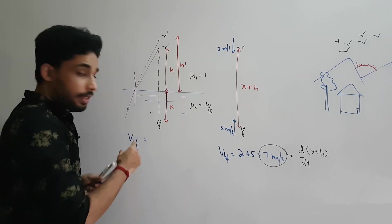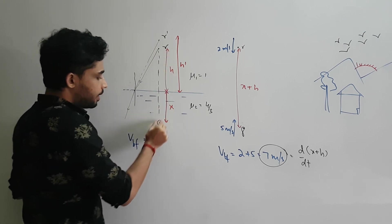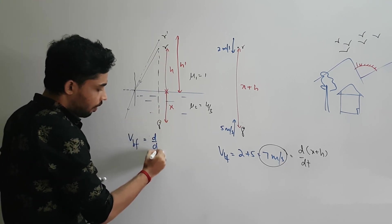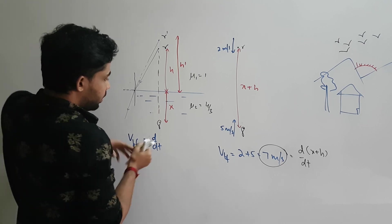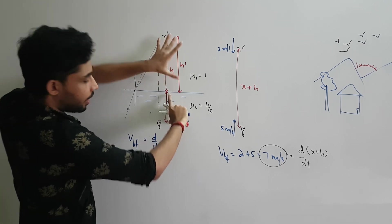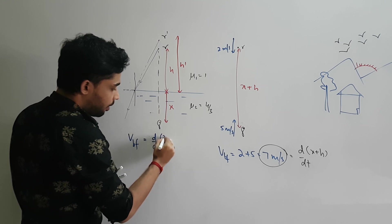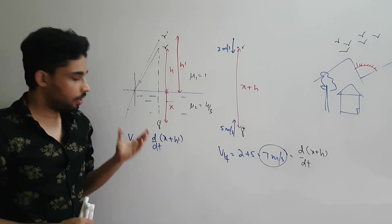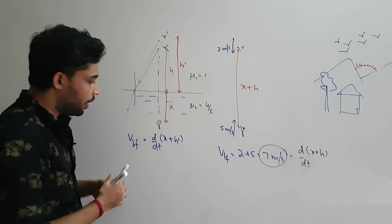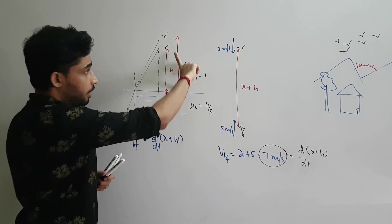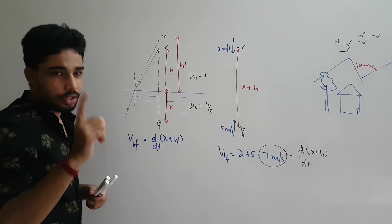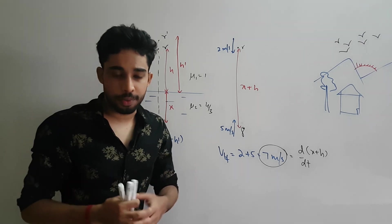In this case, the velocity of the bird as seen by the fish is the rate of change of the distance between them, which is now x plus h'. So the total distance becomes x plus h'. Before solving, we need to know the relation between h' (the apparent height) and h (the actual height of the bird).